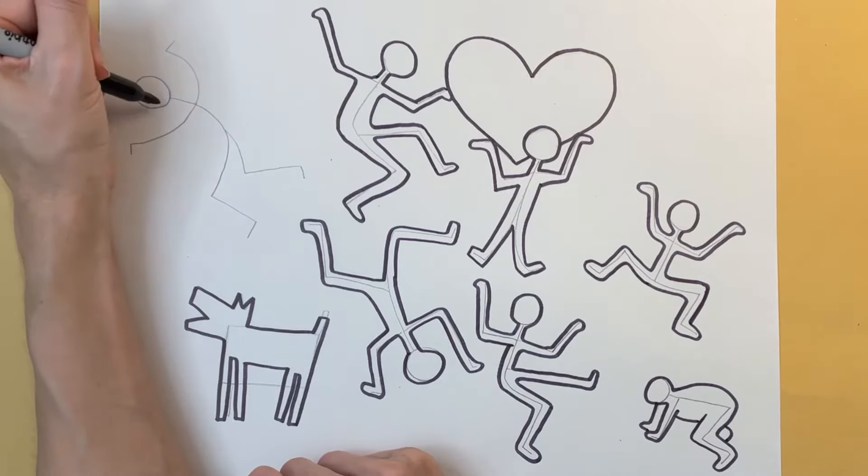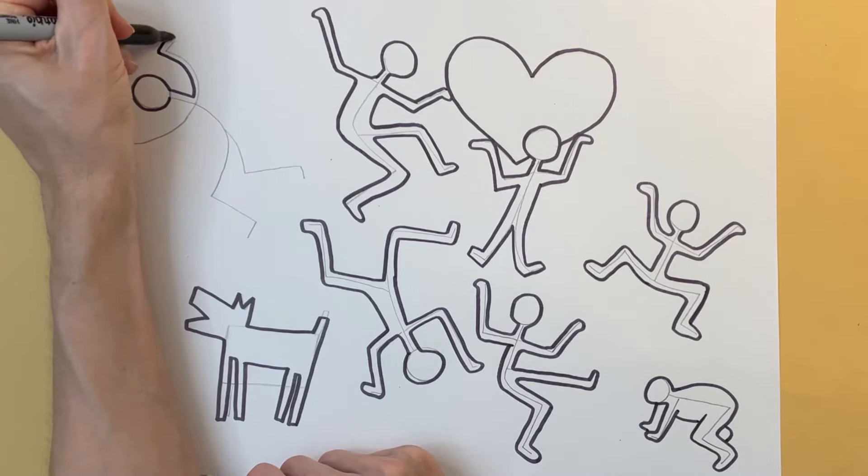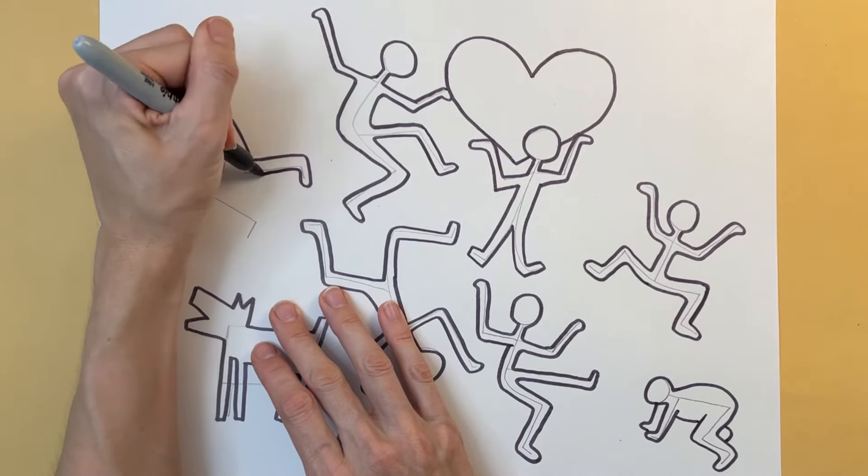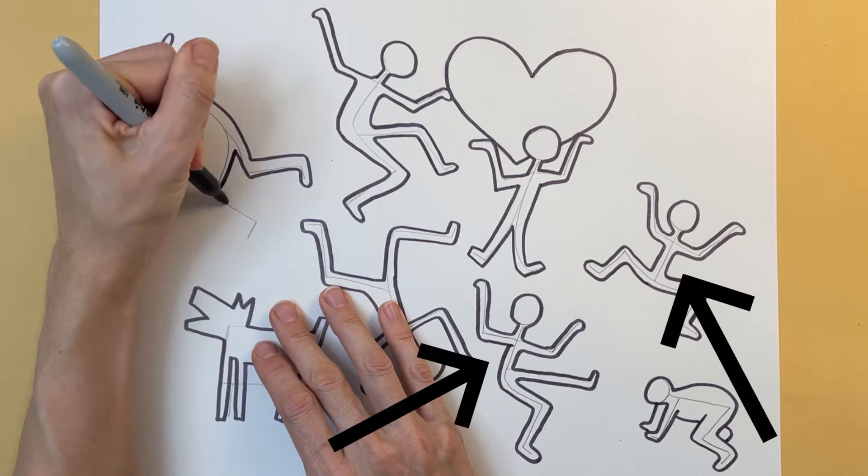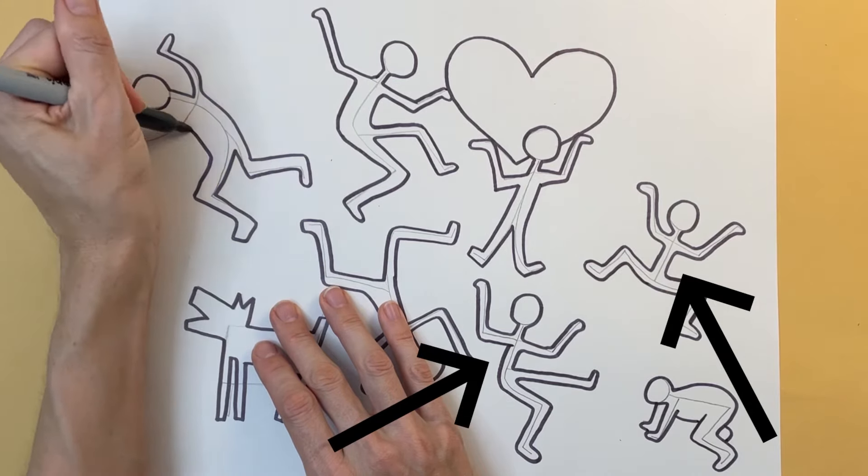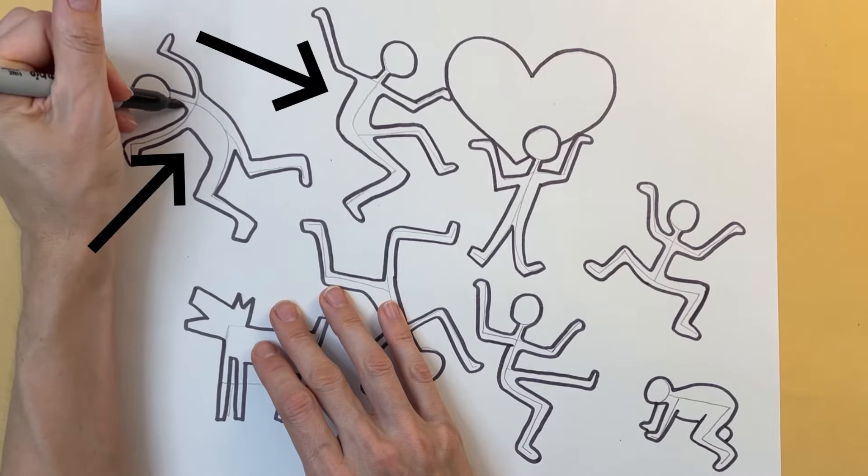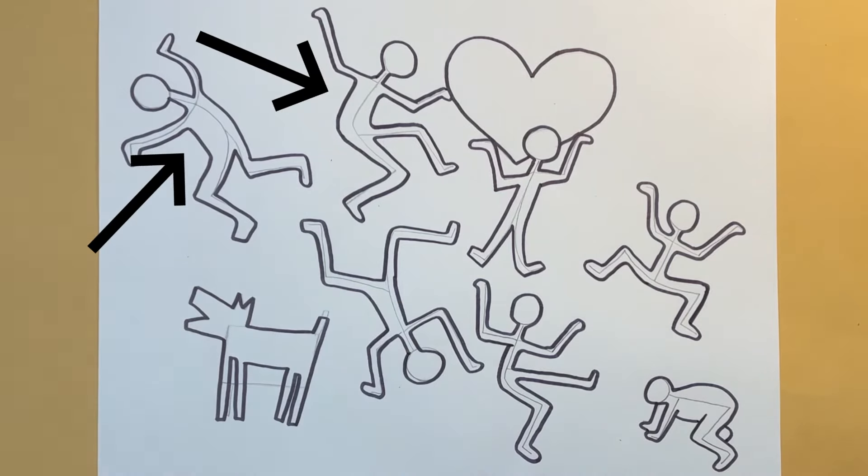If I were going to do this over again I would make the mid sections of my stick figures wider and thicker. I think they're a little bit too skinny. See how the mid section on these two look a little bit too narrow? I made the middle sections on these two a bit wider and I think that looks a lot better. So just keep that in mind.